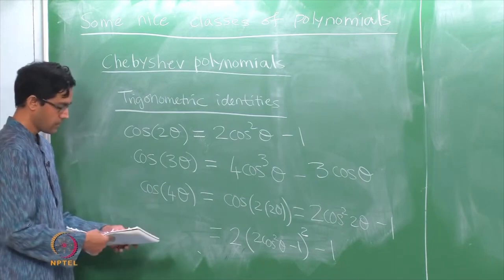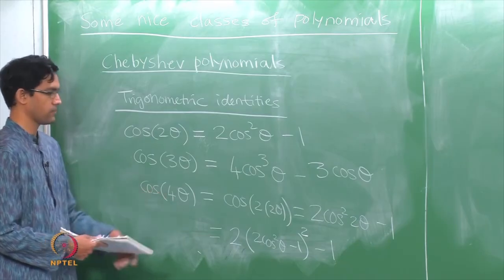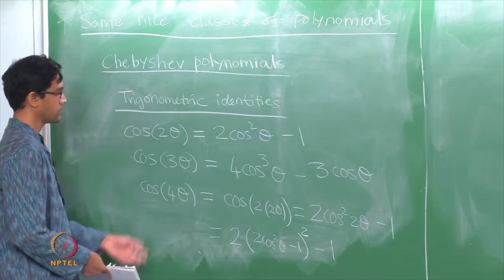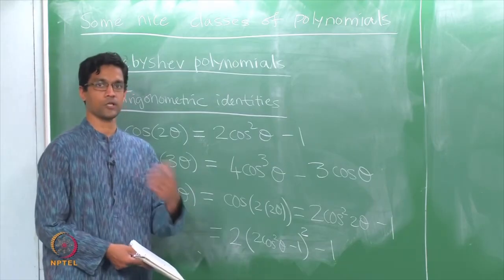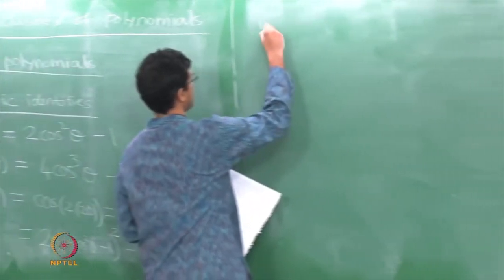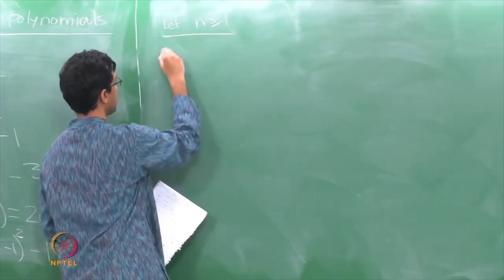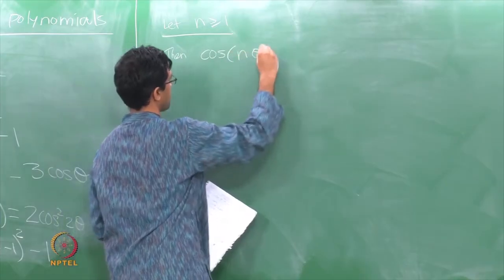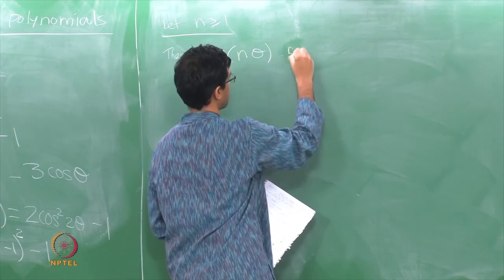The key thing is that if you write cos of n theta for any n — 5 theta, 6 theta, 7 theta and so on — they can all be written as some polynomial in cos theta. The key point here is: let n be any natural number, then cosine of n theta can in fact be written as a polynomial in cos theta.